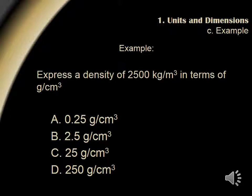When a term in scientific notation is taken to a power, we multiply that exponent. Thus, on the bottom, we have 1 times 10 to the second raised to the third power, which gives us 1 times 10 to the sixth. Finally, when dividing terms in scientific notation, we divide the base and subtract the exponent. Since each term is raised to the sixth power, this leaves us with 2.5, which is our answer, or b.